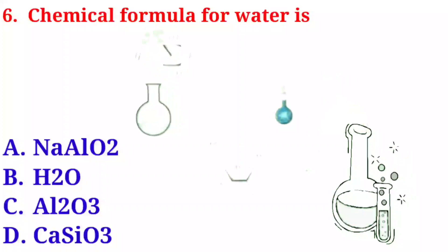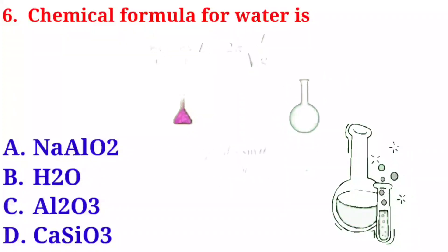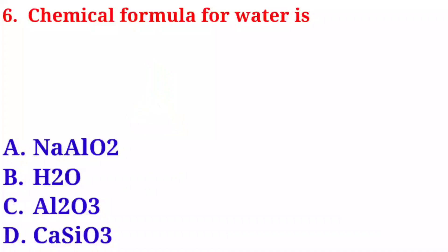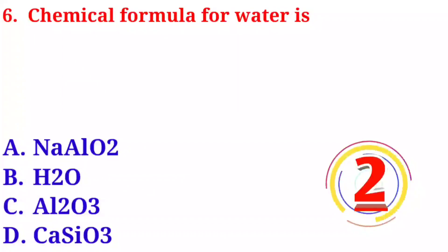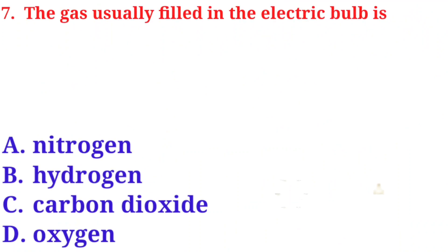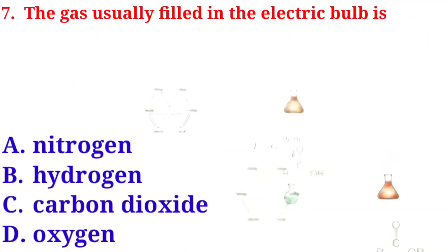Question number six: the chemical formula for water is — option A: NaAlO2. Option B: H2O. Option C: Al2O3. Option D: CaSiO3. The correct answer is option B, H2O.